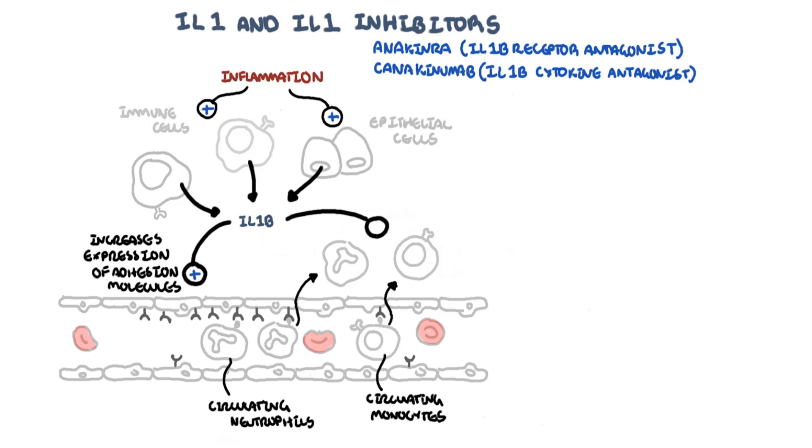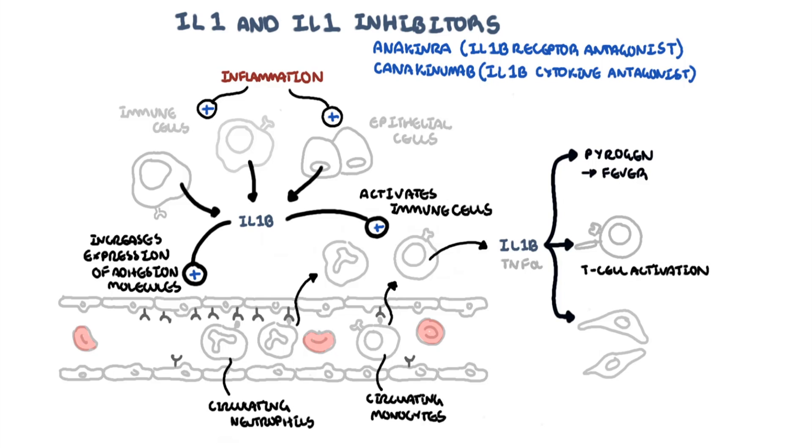Interleukin-1b can also directly activate mature immune cells, telling them to produce more pro-inflammatory cytokines such as interleukin-1b as well as TNF-alpha. Interleukin-1b has other functions, including acting as a pyrogen, increasing body temperature, a hallmark of inflammation. Interleukin-1b promotes T-cell activity, which are cells that are part of your adaptive immune response. Interleukin-1b also stimulates fibroblast proliferation and collagen production, increasing scarring and chronic inflammatory changes.